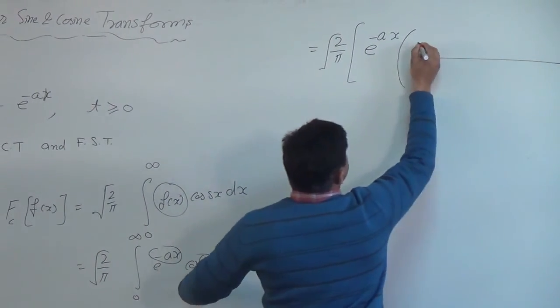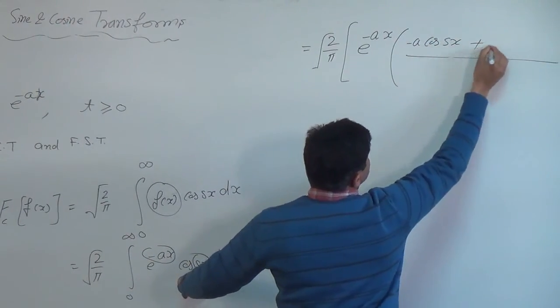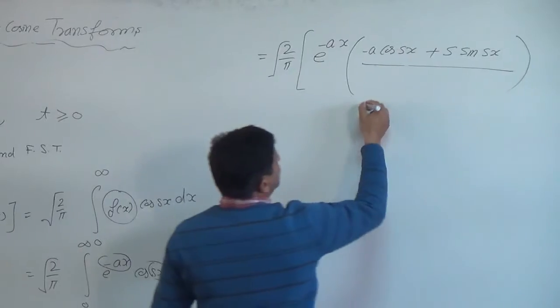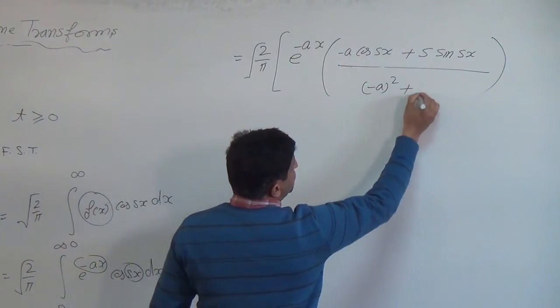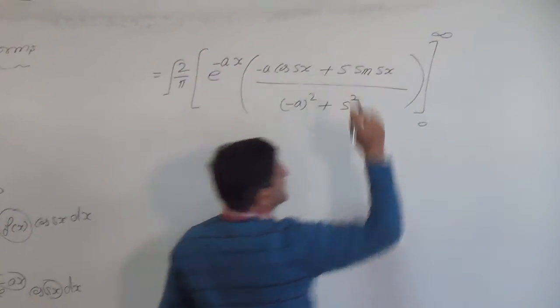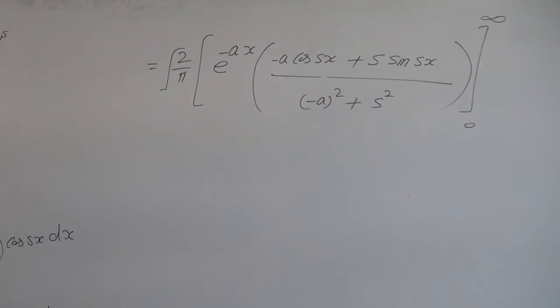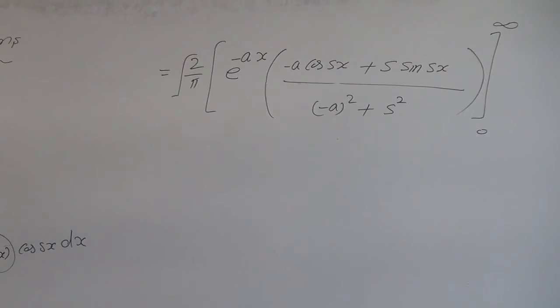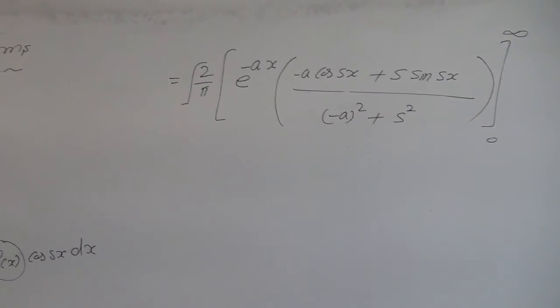It is equal to e raised to the power alpha x, alpha cos(beta x) plus beta sin(beta x), divided by alpha squared plus beta squared. Limits from 0 to infinity. So here alpha will be minus a and beta will be s. Everybody should write these formulas and should remember. Formulas already given in the beginning of transformation.